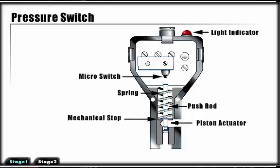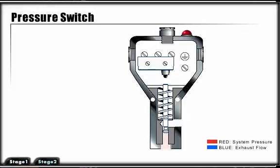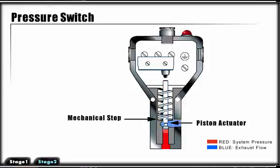External lights are often used to indicate that the switch has been activated. When pressure builds in the system, it enters the device applying force to the piston actuator. This energy is transferred to the mechanical stop, compressing the spring, driving the push rod up until it activates the micro switch. Pressure switches are used to open or close an electrical circuit when a predetermined pressure has been reached.